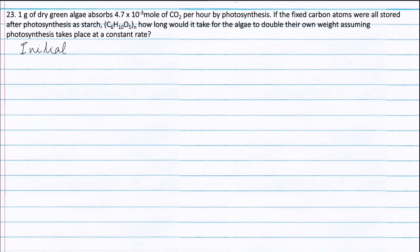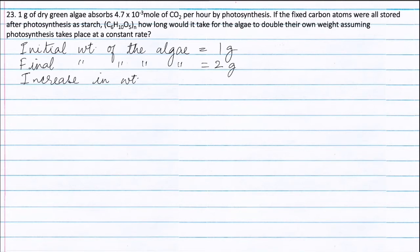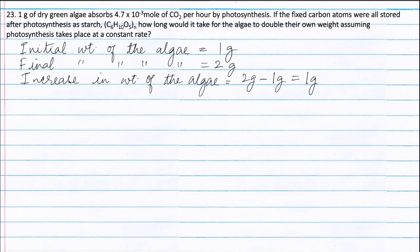Initial weight of the algae is equal to 1 gram. Final weight of the algae is equal to double the initial weight, that is 2 grams. Therefore, increase in weight of the algae is final weight (2 grams) minus initial weight (1 gram), which equals 1 gram. This increase in weight is equal to the weight of the starch, because whatever increase in weight is there, it is due to the formation of starch.